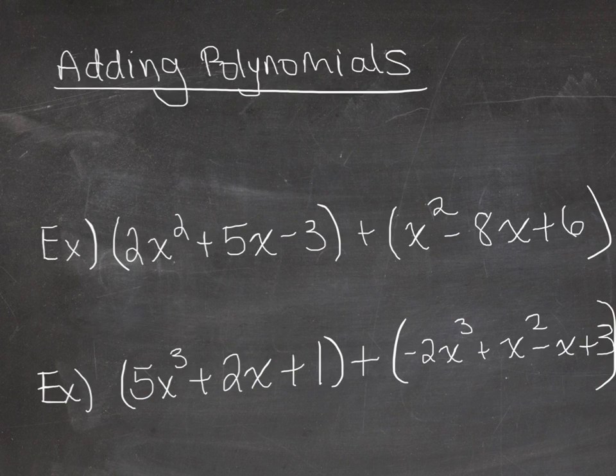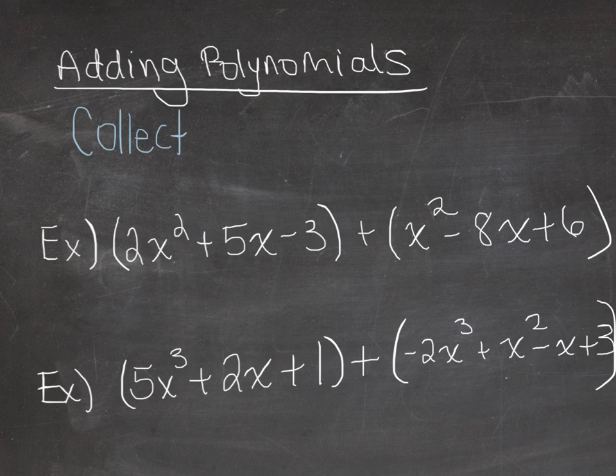So let's look at adding polynomials. When you're adding polynomials, you have to remember that you collect like terms. So what that means is you're going to bring together the terms that are similar. So x squareds go together, x cubes go together, constants go together, x's go together, that type of thing.